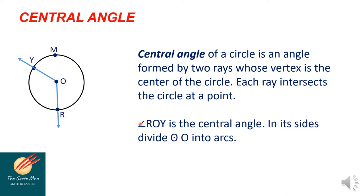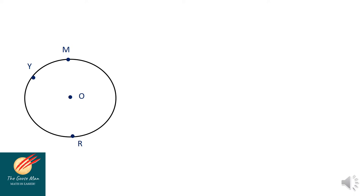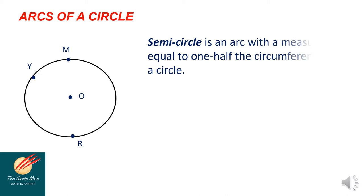The two sides divide circle O into arcs. Let's move on to the arcs of a circle. There are three types of arcs of a circle. The first one is the semicircle. A semicircle is an arc with a measure equal to one half the circumference of the circle. Recall that the circumference of a circle is the distance around the circle. Our example for a semicircle is arc R-M-Y-R.